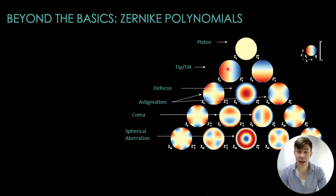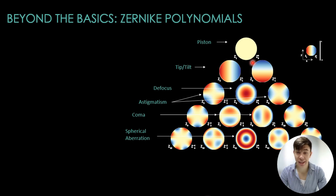We can express any aberrated wavefront as a combination of Zernike polynomials, each with a specific coefficient that indicates its strength and contribution.